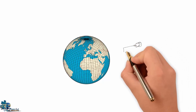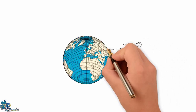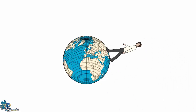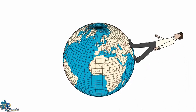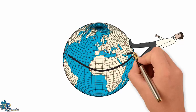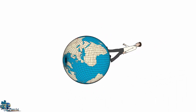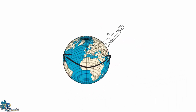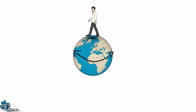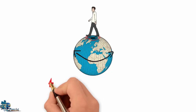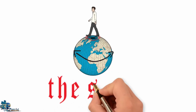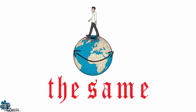Picture a man walking on a globe surface along the equator. Now lock that equator line to the man's feet and rotate the globe so the man is now walking along a higher latitude line. Now you can see that the lines are different, yes, but the curvature of the globe is the same.